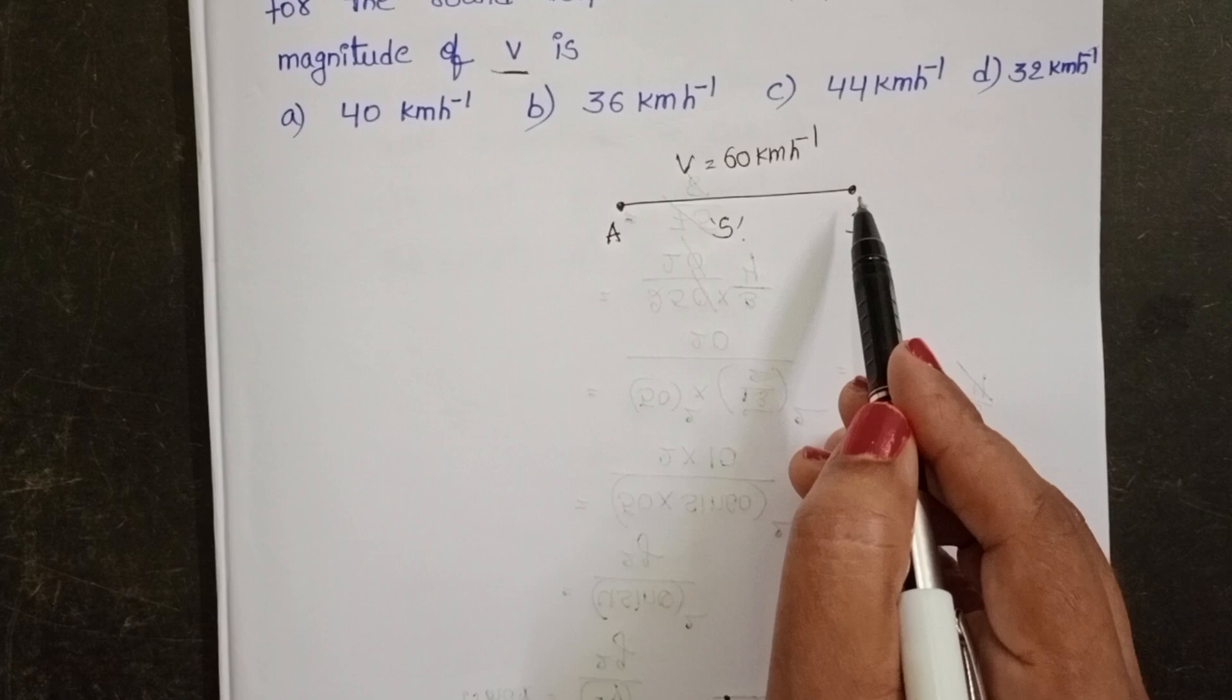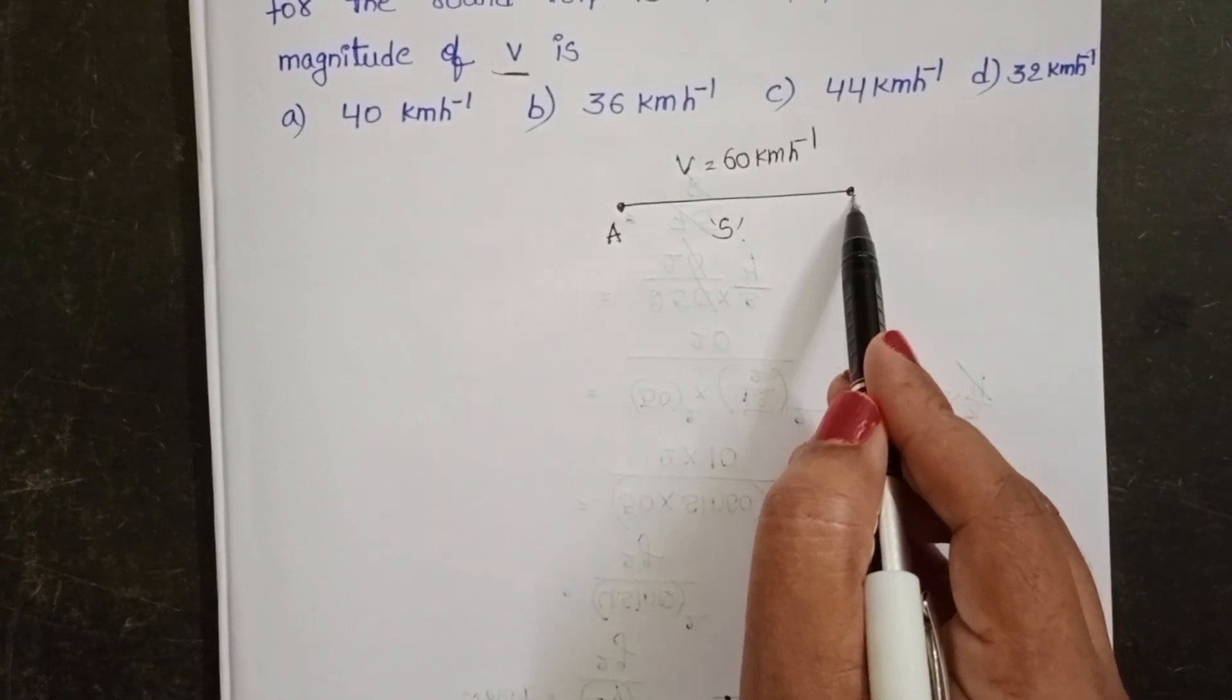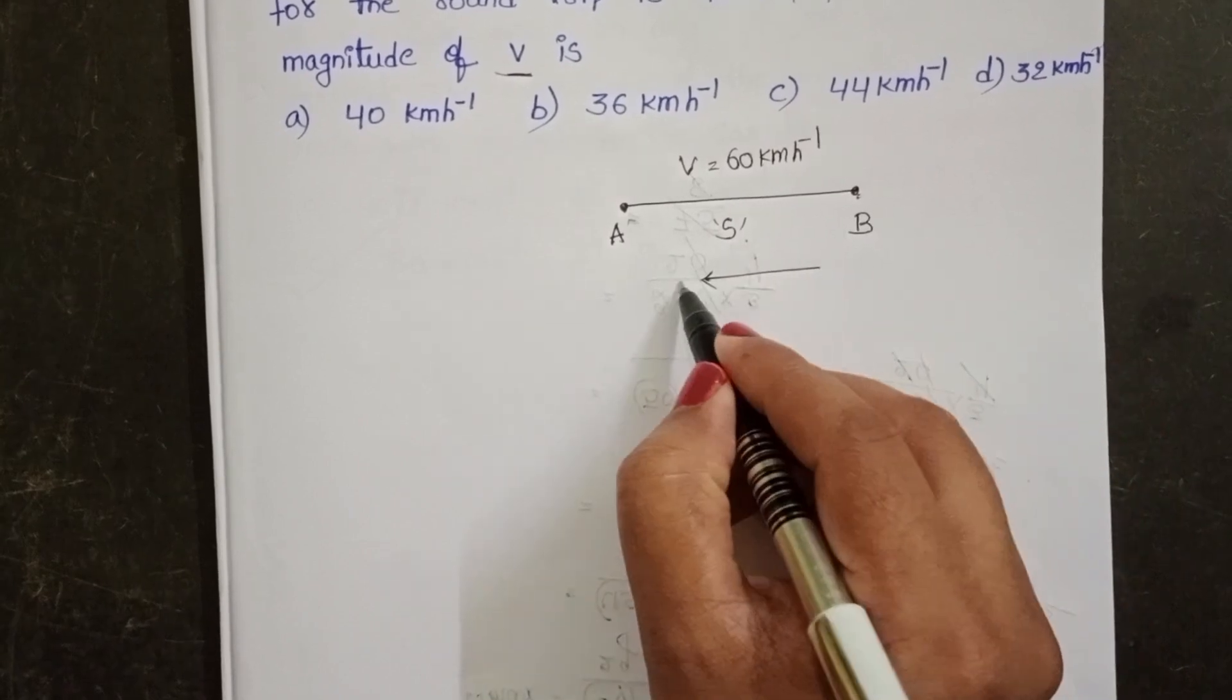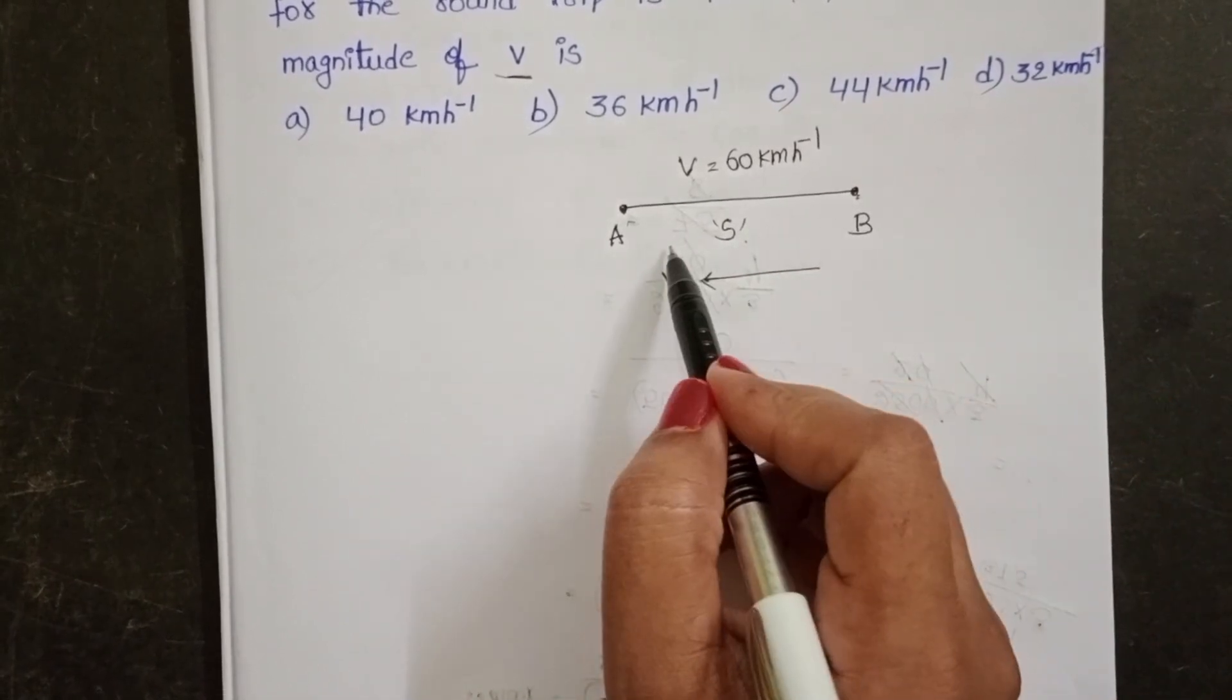And after then, again the car returns from B to A with a speed V. Here distance is same only.